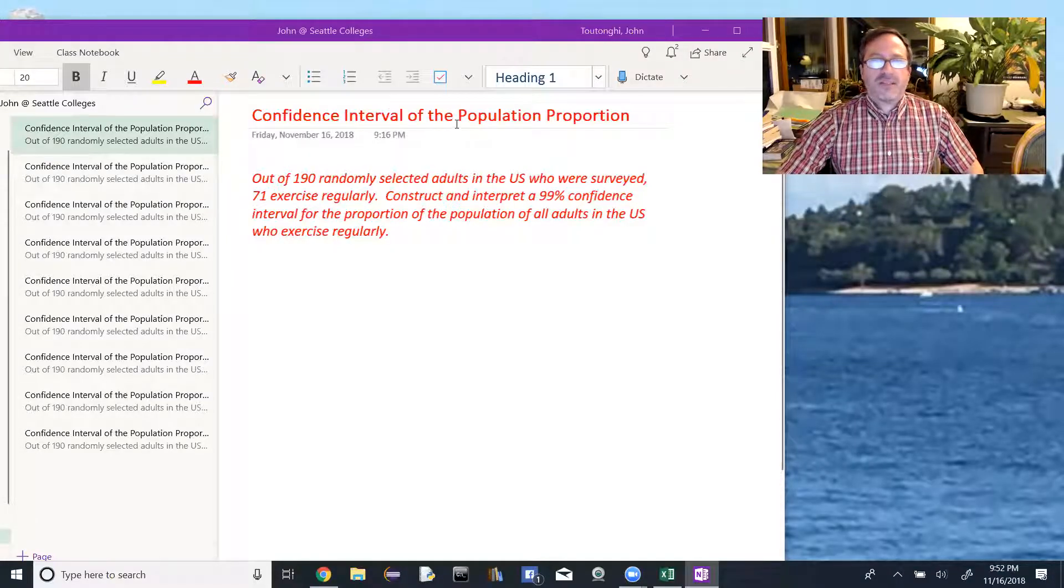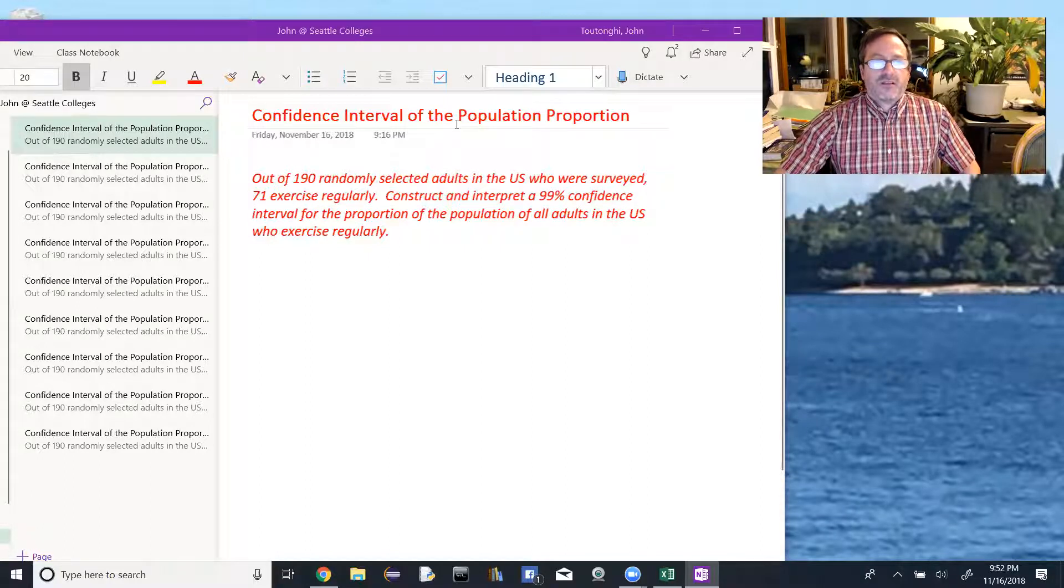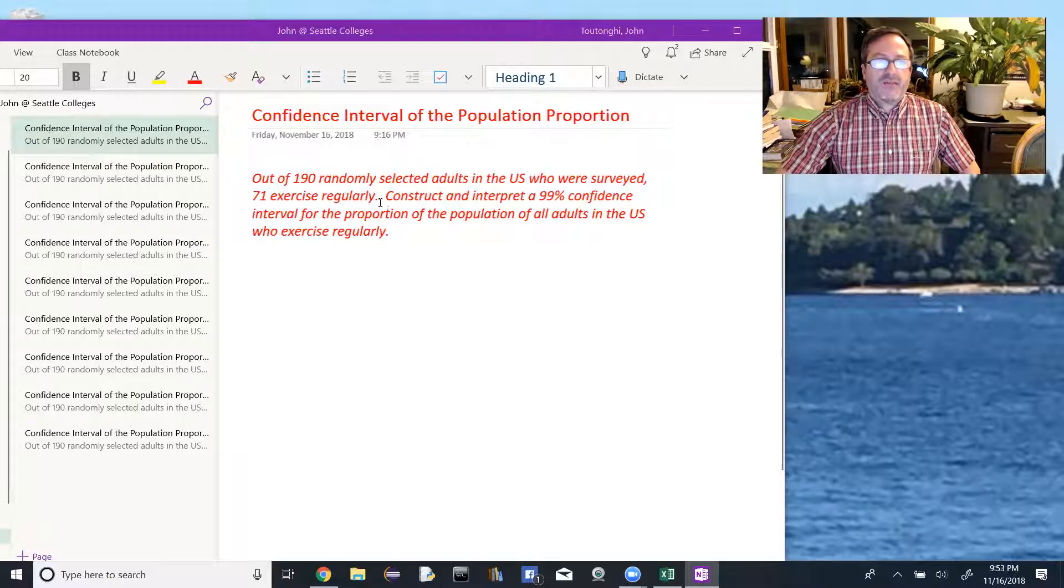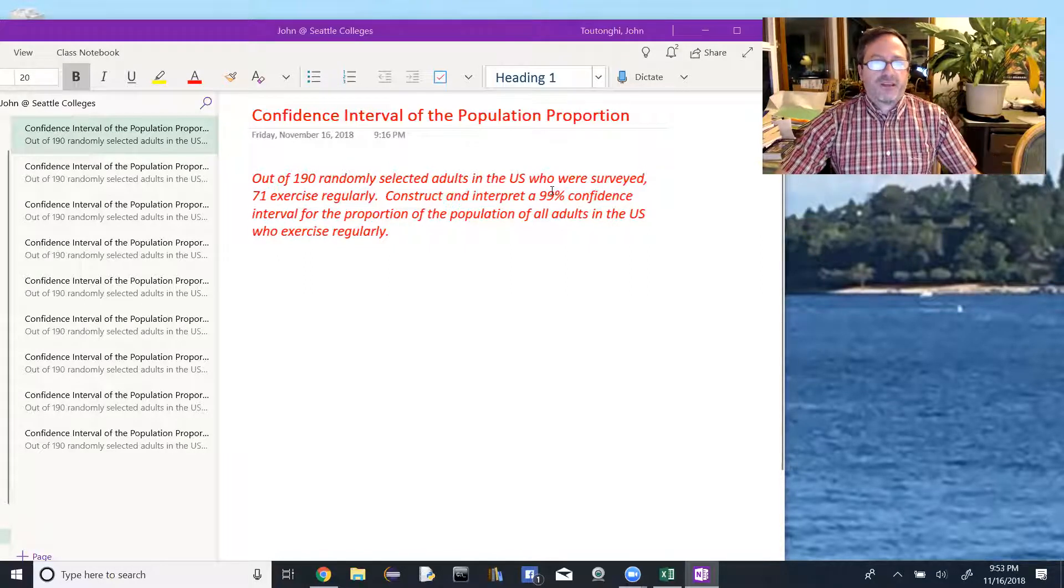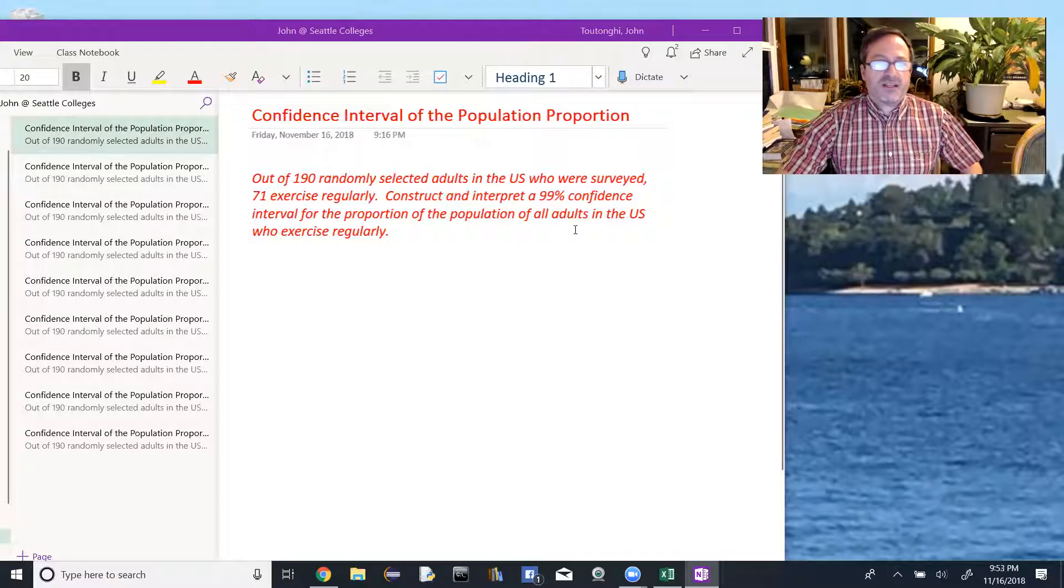We're going to look at confidence intervals of the population proportion. Out of 190 randomly selected adults in the United States who were surveyed, 71 exercise regularly. Construct and interpret a 99% confidence interval for the proportion of the population of all adults in the United States who exercise regularly.